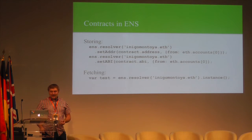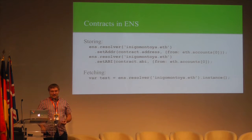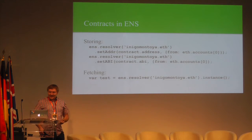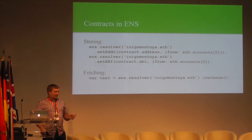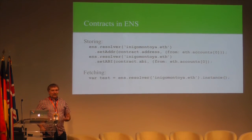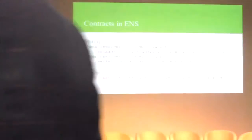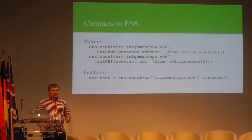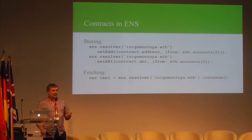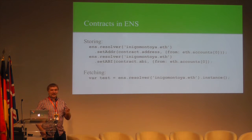Fetching it afterwards is just as straightforward. You simply ask for the resolver, and then instead of asking for the name, you call .instance(). What .instance() does is first fetch the name, second fetch the ABI, and then construct a contract instance in Web3 from the name and the ABI and hand it back to you. So now you no longer need to copy and paste ABIs or addresses — you can interact with a contract with nothing other than its name.